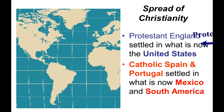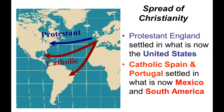How did Protestantism spread even more? Protestant England sent the Anglican Church over to what is now the United States, which is predominantly Protestant. Catholics went to Portugal, Mexico, and South America, which is why most people down there are now Catholic.